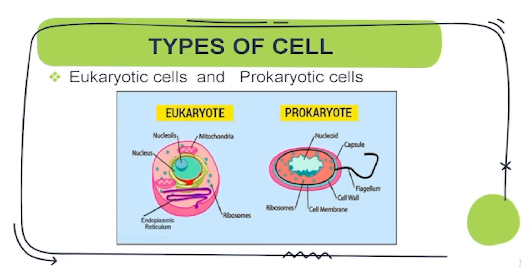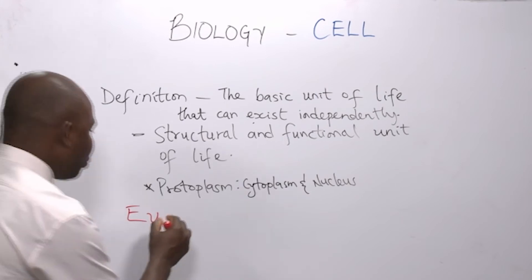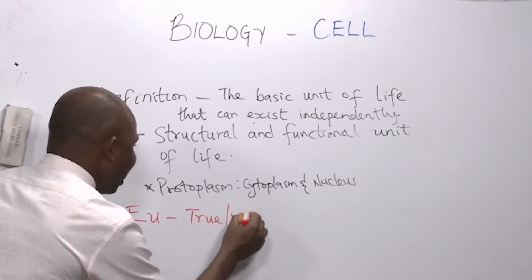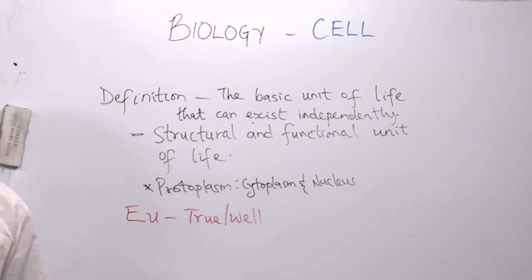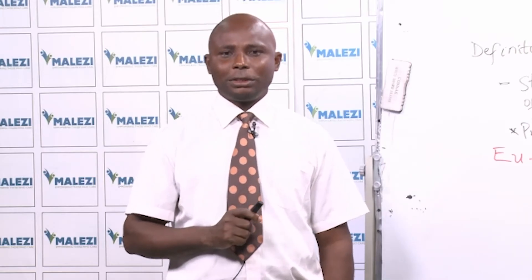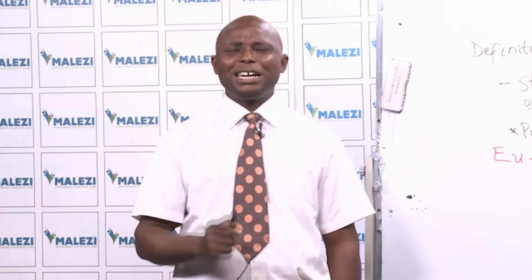What are the types of cells that we have? Basically, we have two types of cells: eukaryotic cells and prokaryotic cells. The word eukaryotic is from a Greek word meaning 'true' or 'well.' When we talk about eukaryotic cells, it is a cell that has a well-developed nucleus. While prokaryotic cells are cells without a well-developed nucleus.